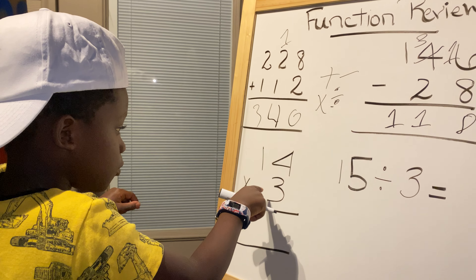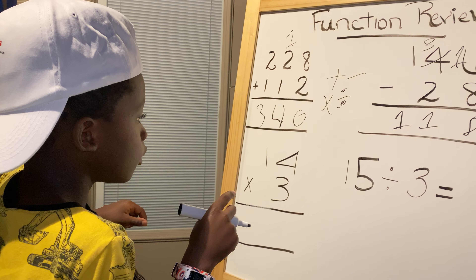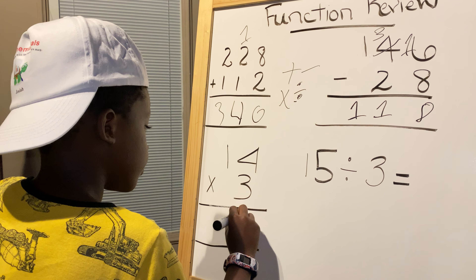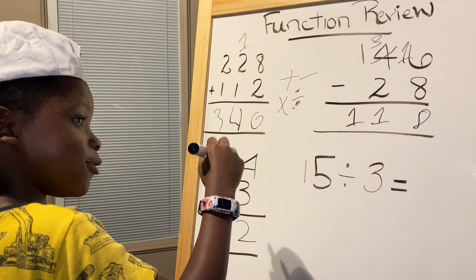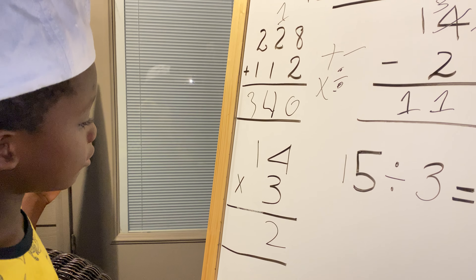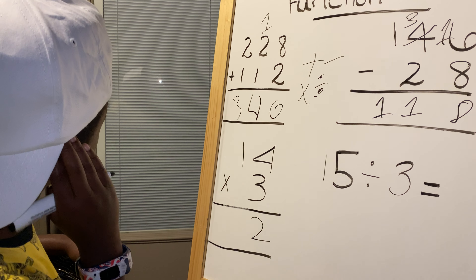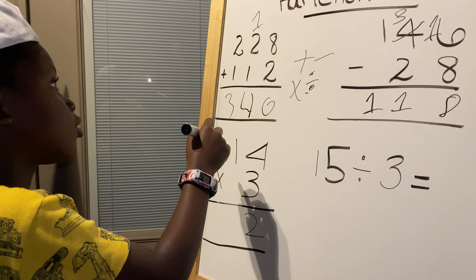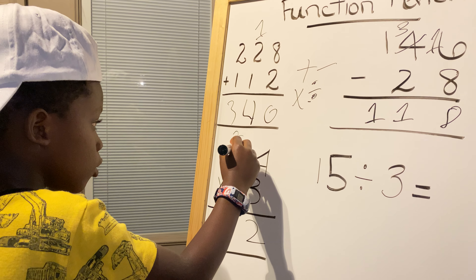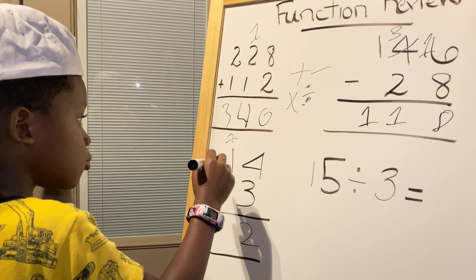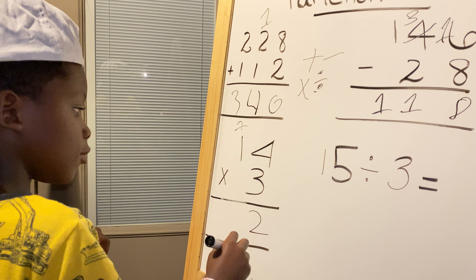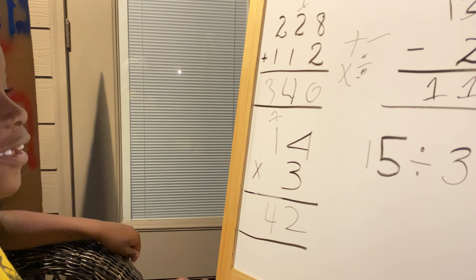Now we're gonna multiply. Four times three equals twelve, so put the two here. This one's new — you put the two here and then you put the one here. It's kind of the same thing. Three times one equals three, plus one equals four. Touché!